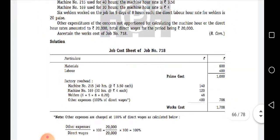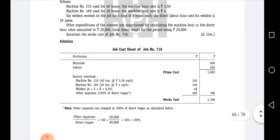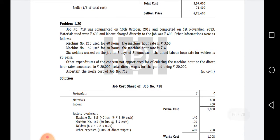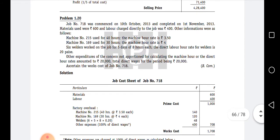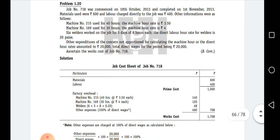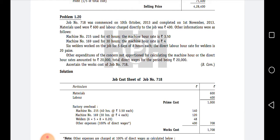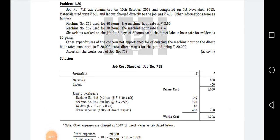Now for the cost sheet of job number 718: materials are 6,600 rupees, direct labor is 400 rupees, giving a prime cost of 1,000 rupees. Next, factory overhead: machine number 215 for 40 hours at 3.5, which gives 140 rupees. Machine number 169 for 30 hours at rupees 4, which gives 120 rupees.